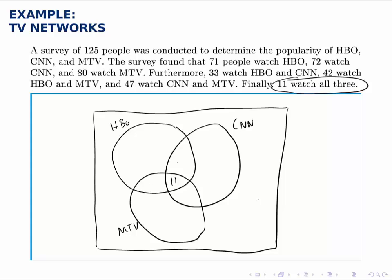Then we work outward from there, going to the other intersections. So for instance, we can look at the intersection of HBO and CNN. If we look for that in the word problem, we see HBO and CNN consists of 33 people, but we've already accounted for 11 of them in this bottom wedge, so only 22 go here. But now notice there's a total of 33 in the intersection between HBO and CNN. This is why we have to start in the innermost intersection and work outward.